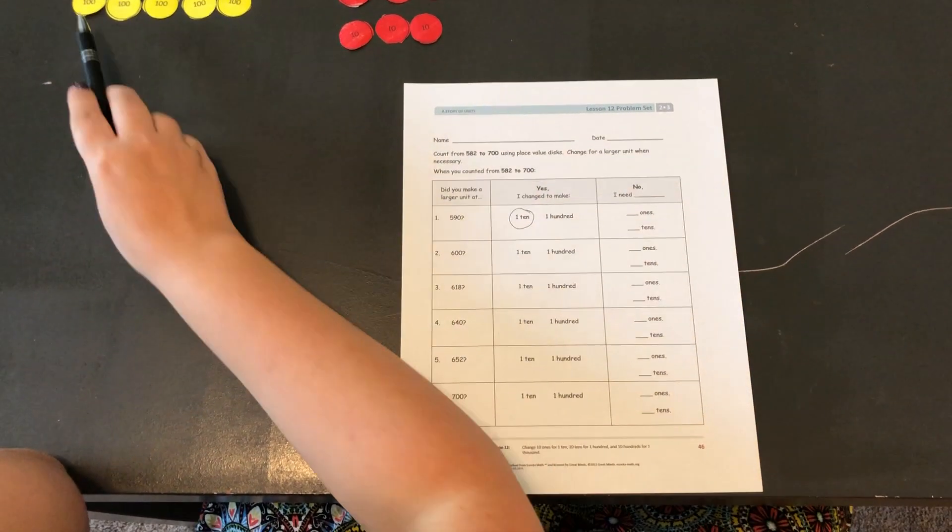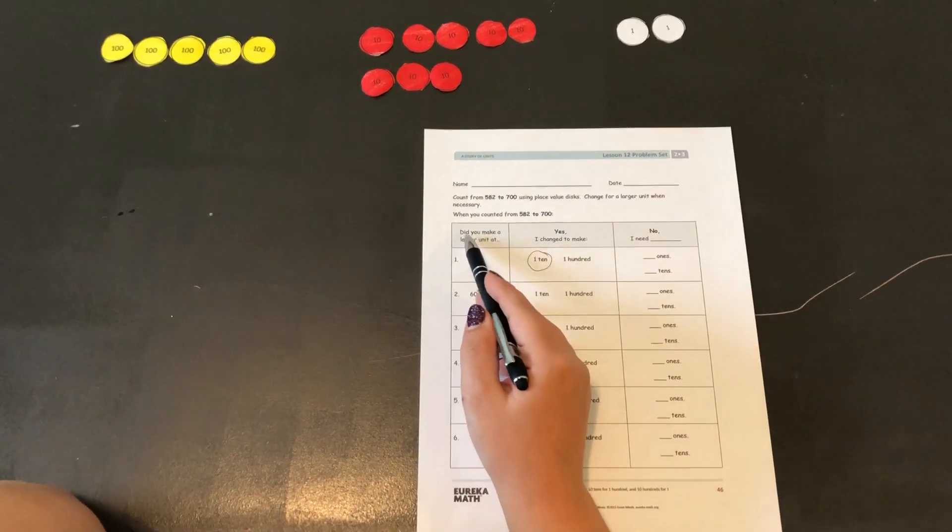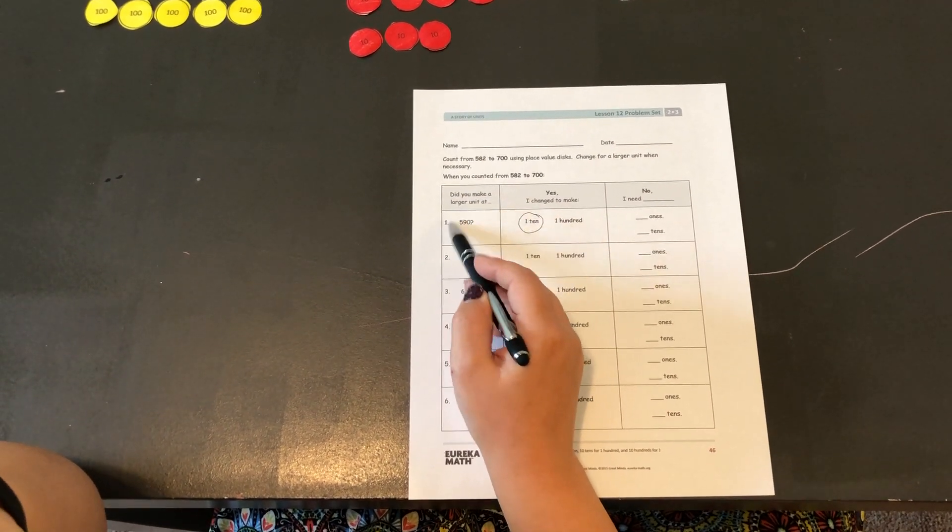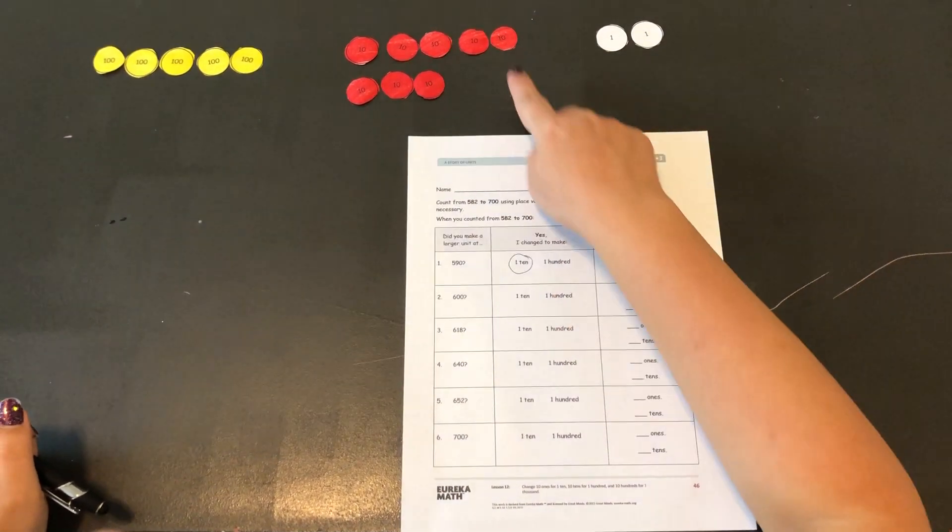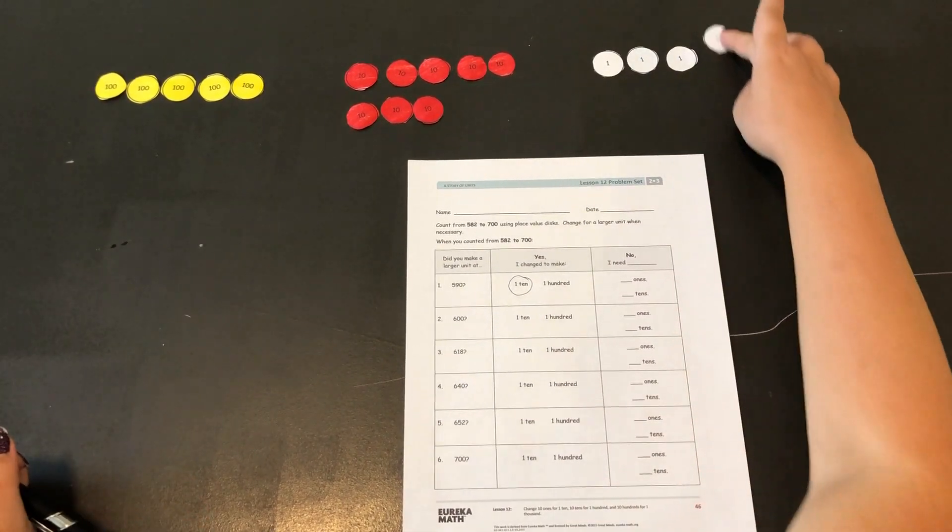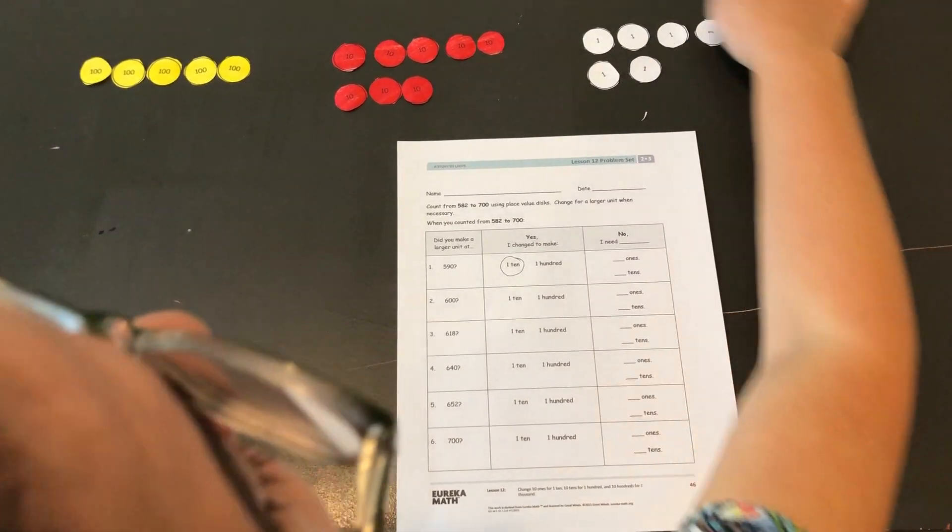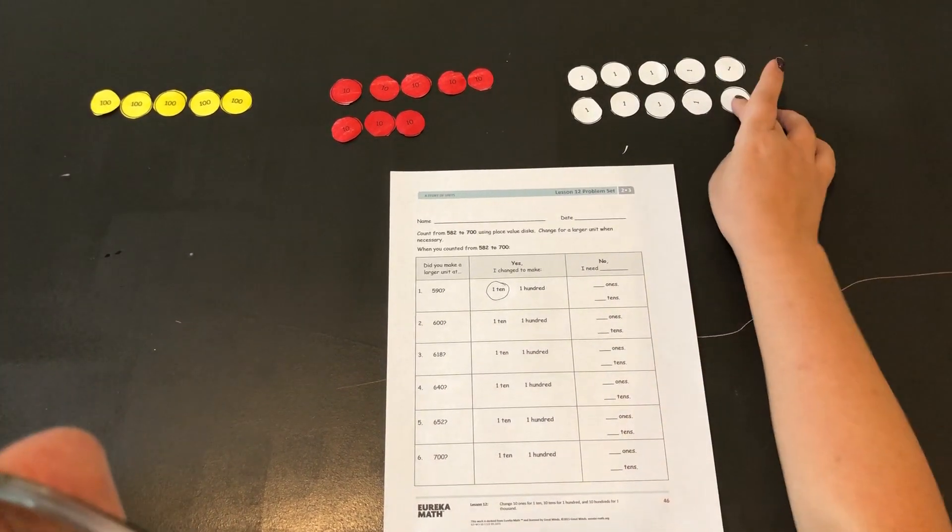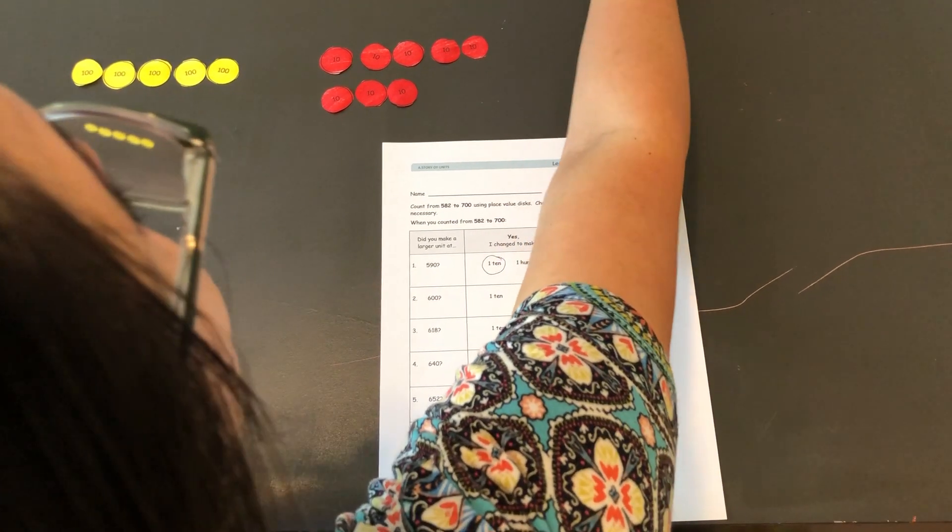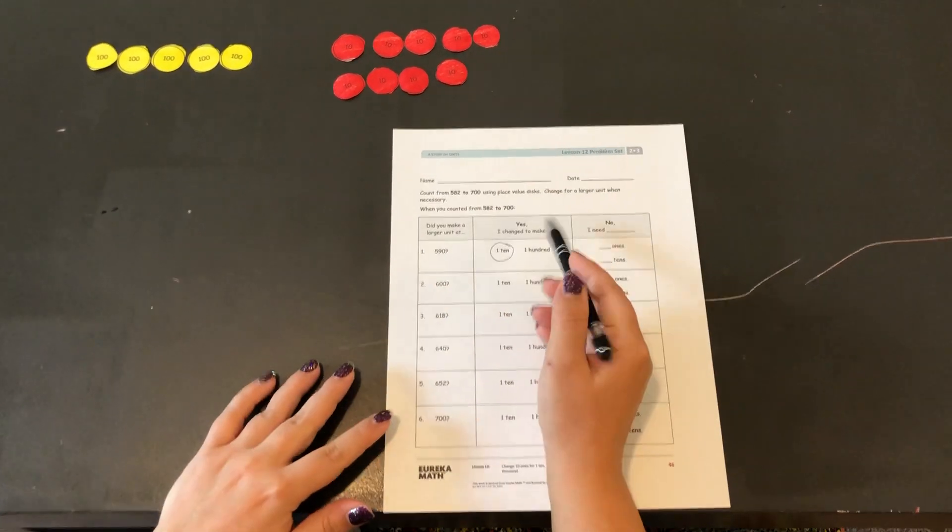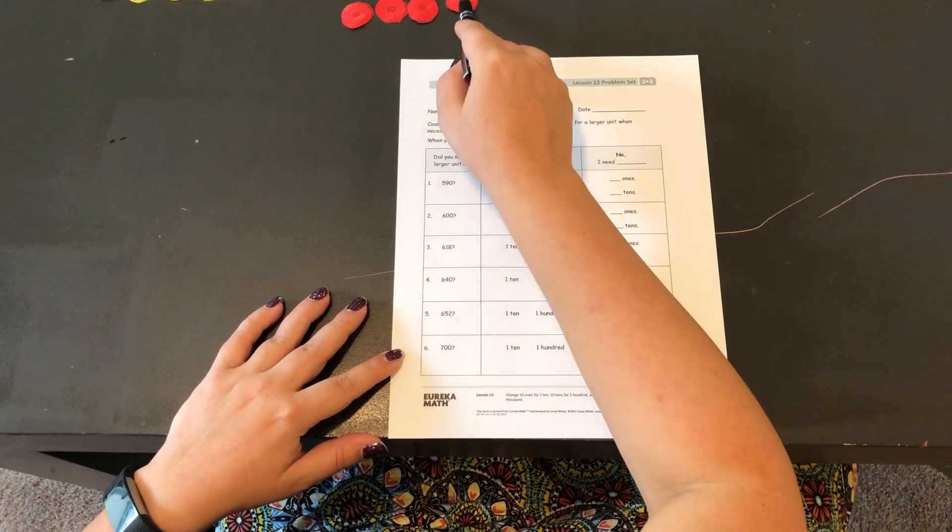Alright so I have five hundreds, eight tens, and two ones for 582. On the chart it says did you make a larger unit at 590? So first I need to count up to 590. If I'm at 582, now I'm at 583, 584, 585, 586, 587, 588, 589, 590. So I take ten ones and I'm going to trade them out for one ten. Yes I changed to make one ten because I took ten ones and turned it into one ten.